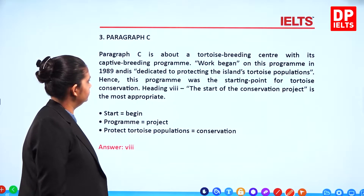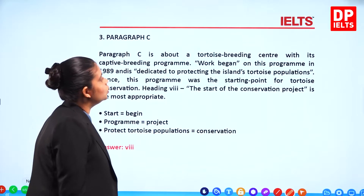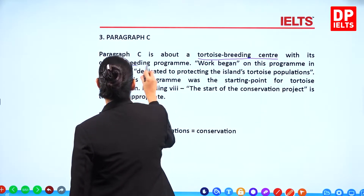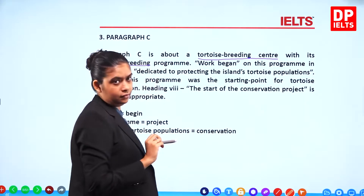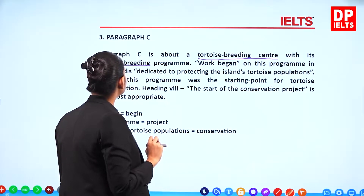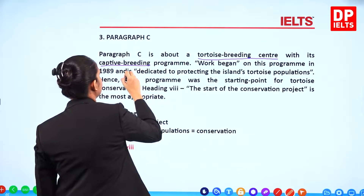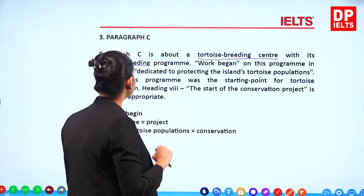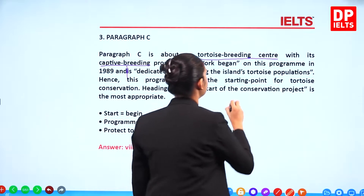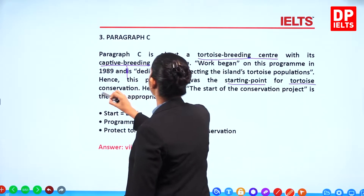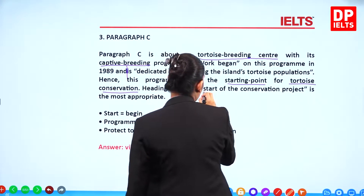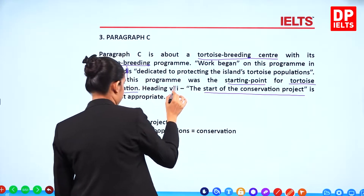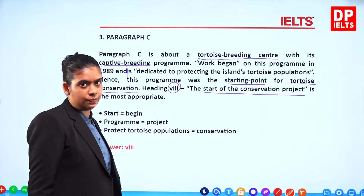Paragraph C is about the tortoise breeding centre with its captive breeding programme. Work began on this programme in 1989 and is dedicated to protecting the island's tortoise populations. This programme was the starting point for tortoise conservation, and therefore the start of the conservation project seems to be the most appropriate answer — so the answer should be 8.